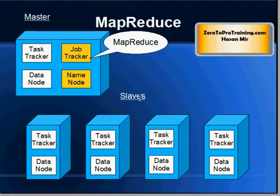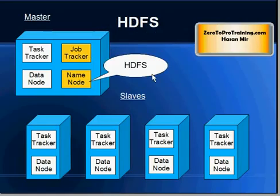If you look at the architecture of Hadoop from a very high level, we have MapReduce that consists of JobTracker at the MasterNode and TaskTrackers at the SlaveNodes, and the FileSystem known as Hadoop FileSystem consists of NameNode at the Master Computer and DataNode at Slaves. This very closely resembles what Google has — Google File System known as GFS and MapReduce.